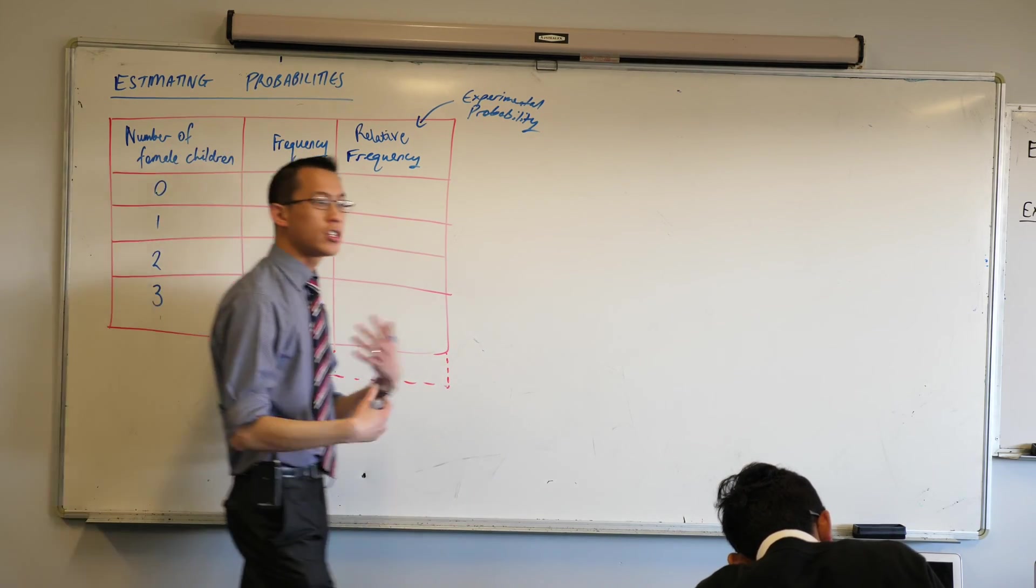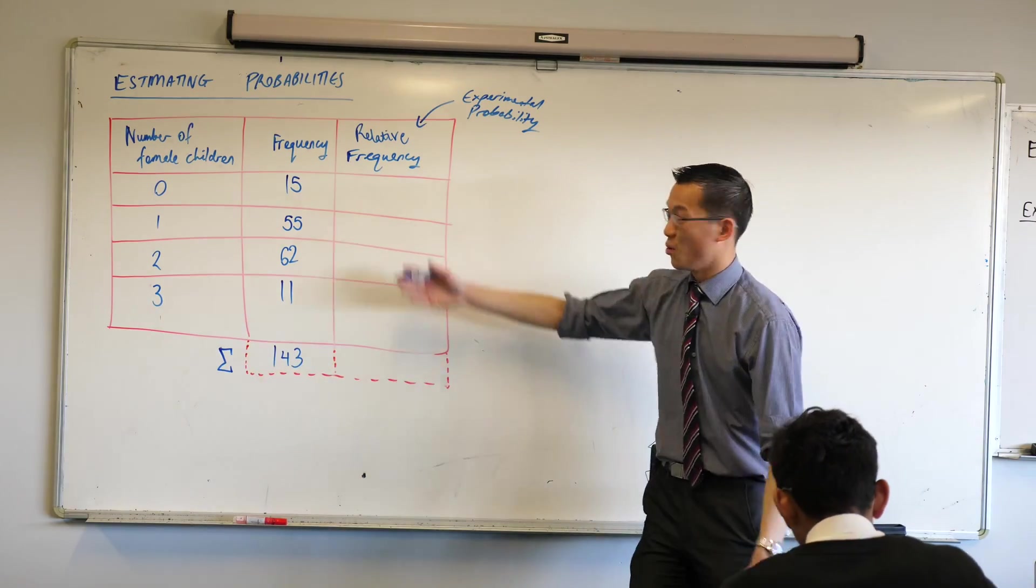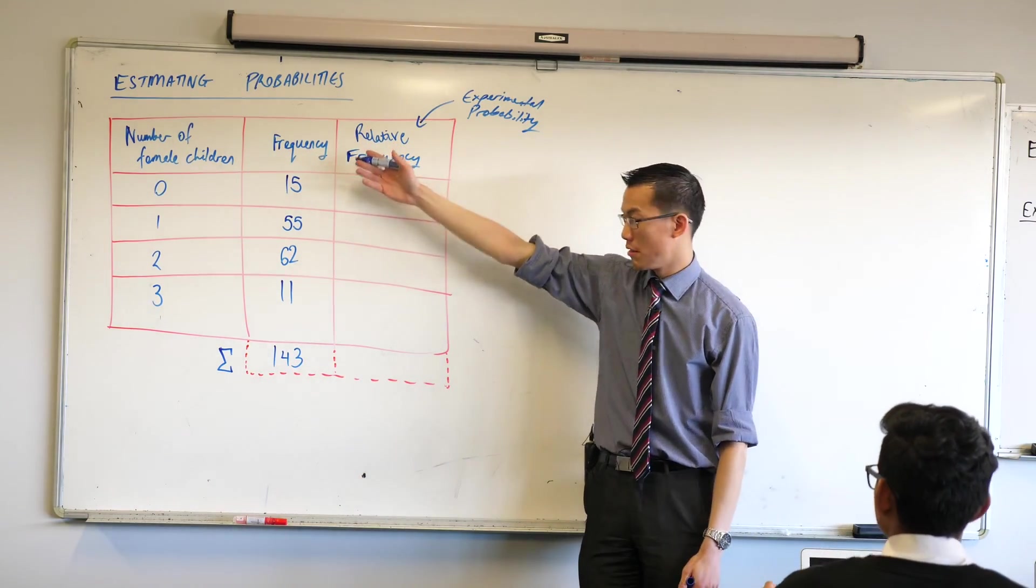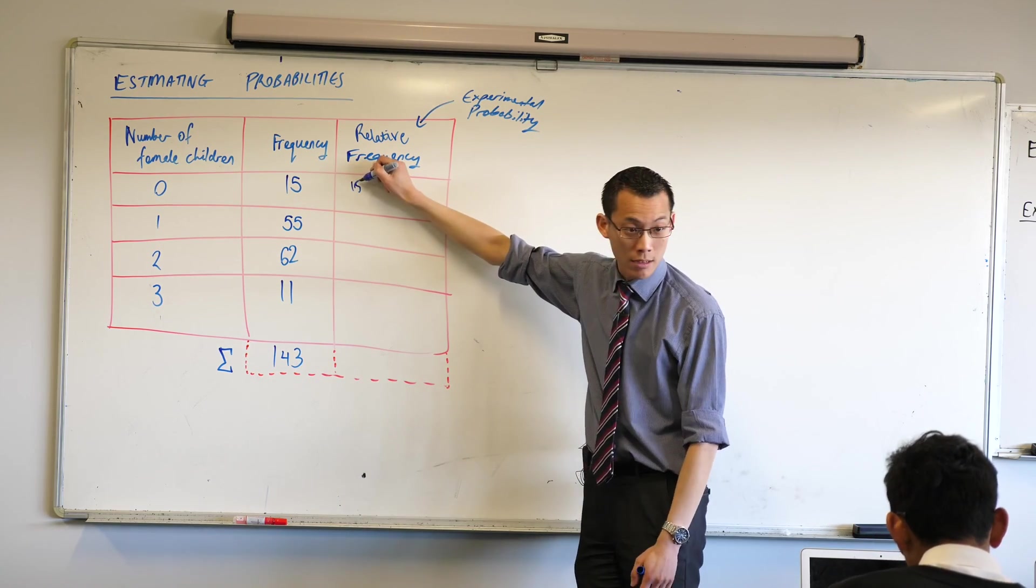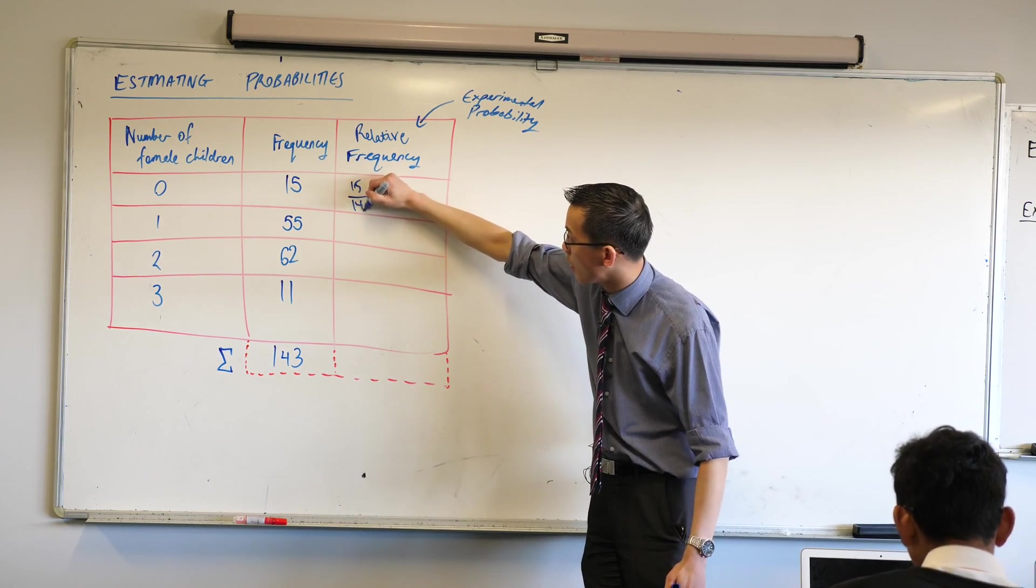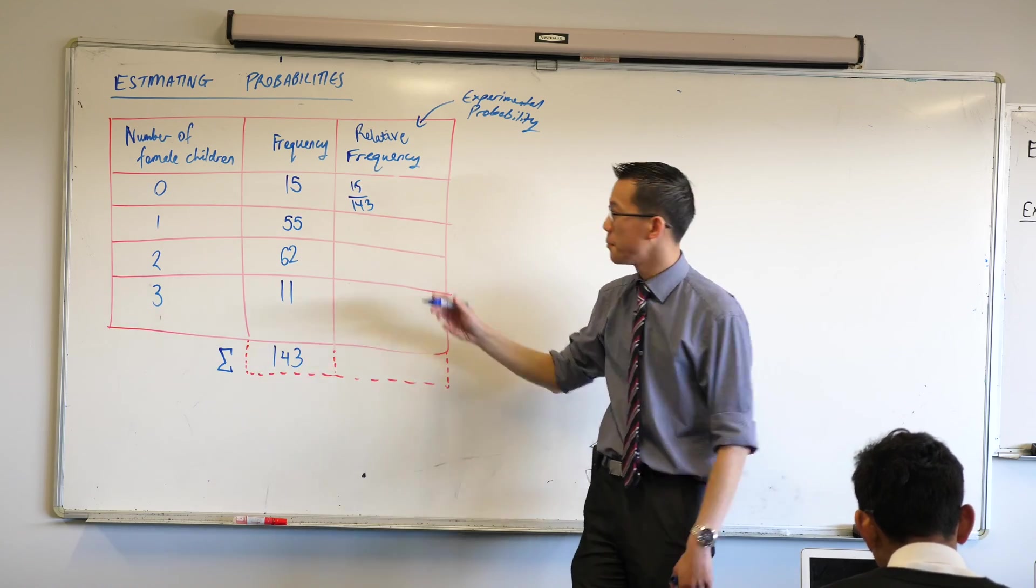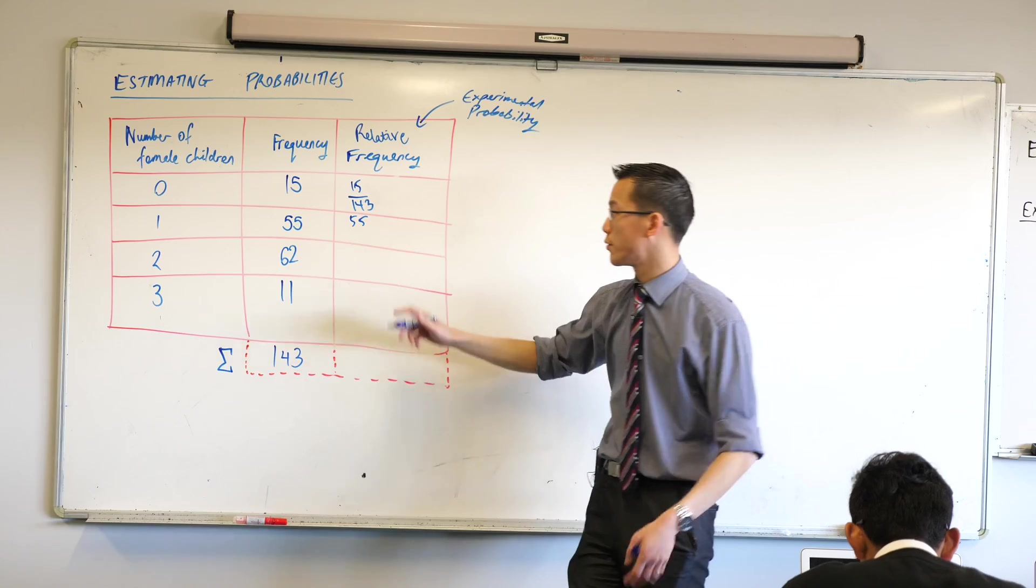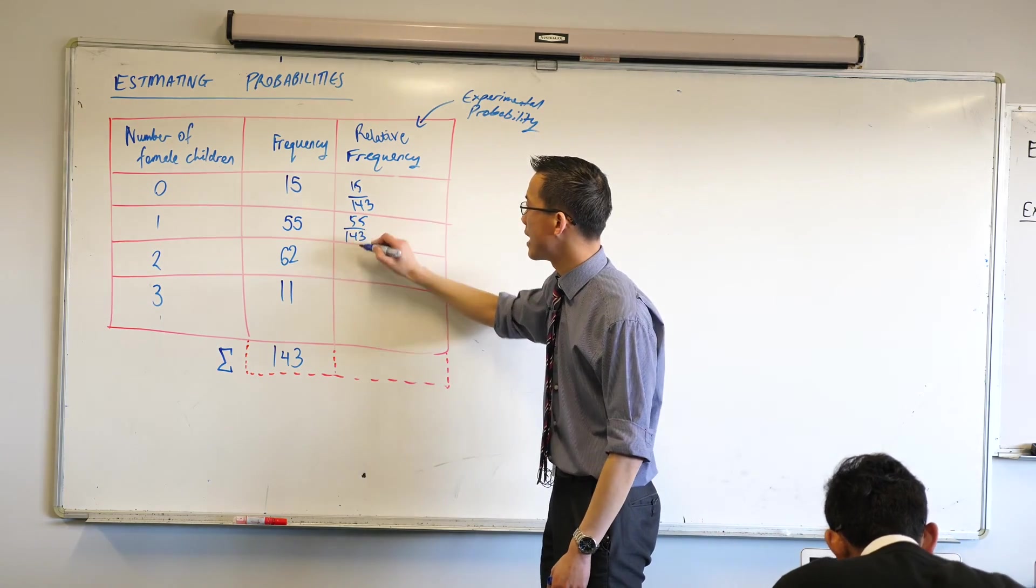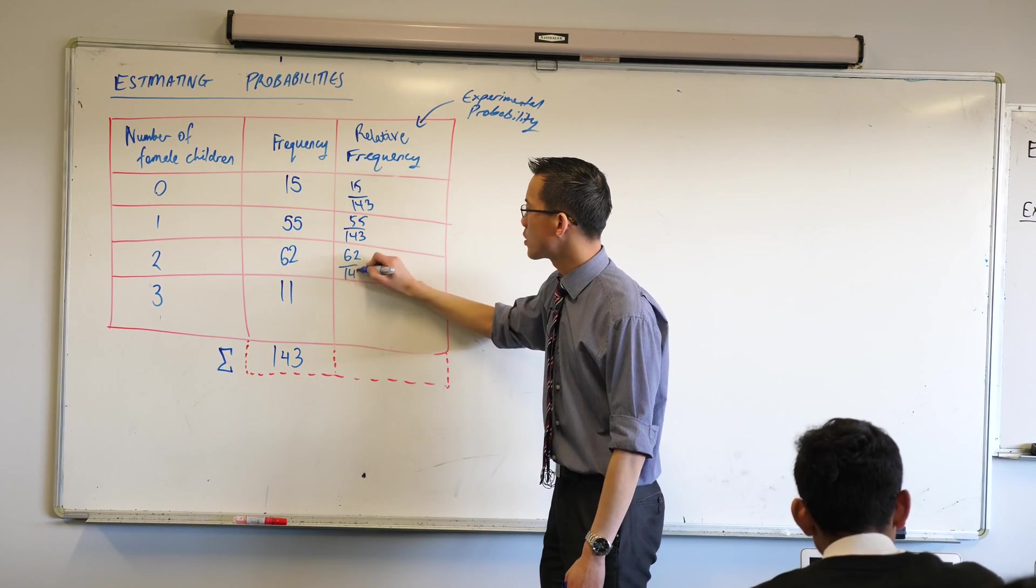There's a couple of things I want to draw out here. The first one is just to do this calculation from the start. We just take our frequency, divide by how many people there are. So in each case it's going to be this number like 15 divided by 143. Then it's going to be 55 divided by the same 143, and this is what we get.